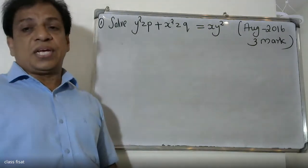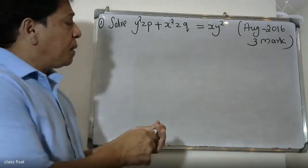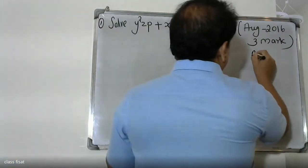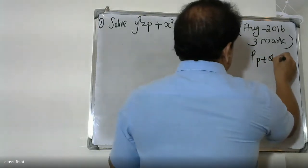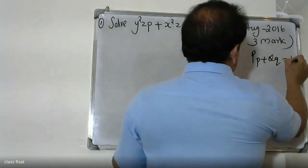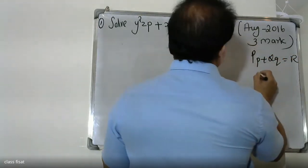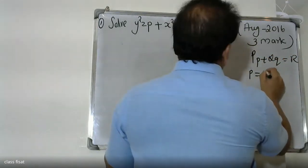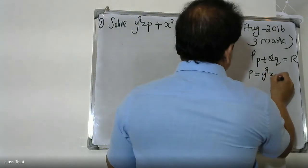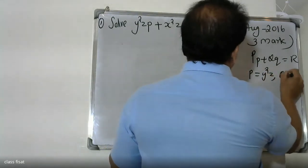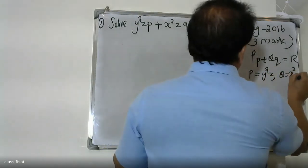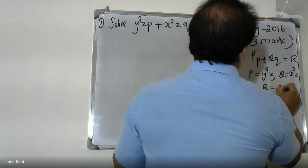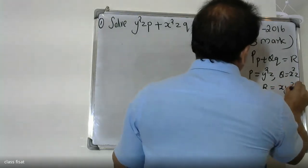The Lagrangian equation — the standard form is pp plus qq is equal to r. That is, p is equal to y-squared, q is equal to x-squared, and r is equal to x y-squared.